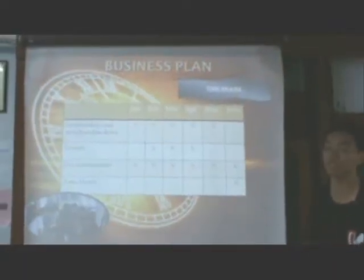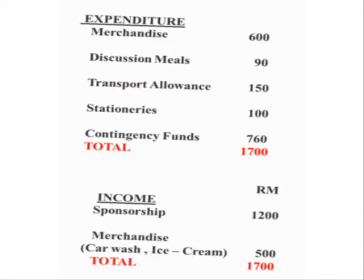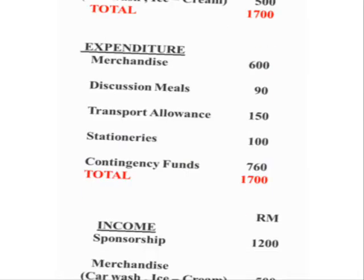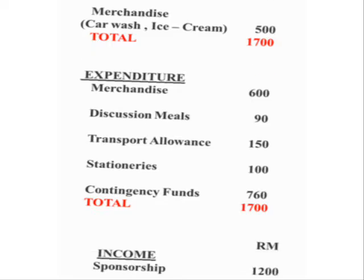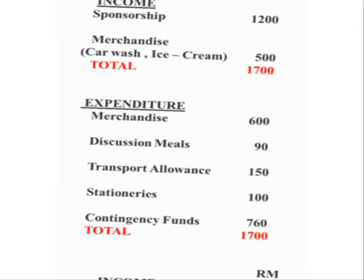The business plan: first, let's have a look at our team's time frame. From January until May, we completed our sponsorship and merchandise drive. February, March, and April, we designed our team logos, team car, and team shirt. From January through June, we documented everything. Our team's monetary budget includes RM1,200 collected from sponsorship and RM500 from merchandise, car wash, and ice cream sales.